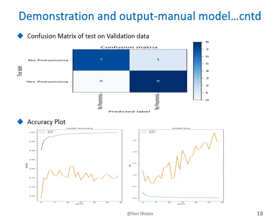This slide shows the confusion matrix of the validation test and the accuracy plot of the manually developed model. The confusion matrix tells us that true positive cases are 8, true negative cases are 7, and false positive cases are 1. There are no false negative cases in this demonstration.